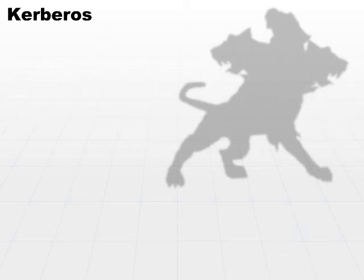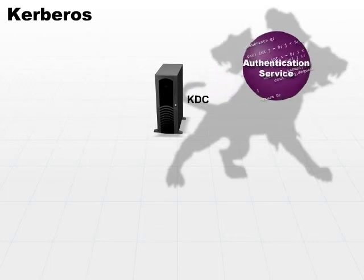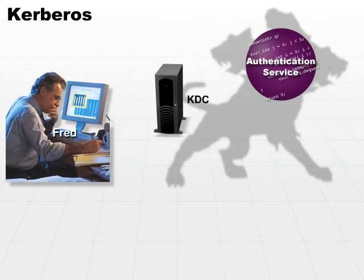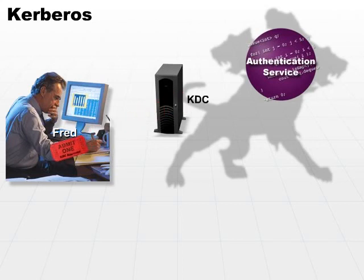Effectively, we have the KDC, which is the authority that authenticates a subject's access to objects. The KDC asks the authentication service: Fred has asked to access printer LPT4 — is that okay? The authentication service will come back and say either yes or no. Based on the response, the KDC will generate a ticket and respond back to the original requester, the subject, with a response in the form of a ticket.